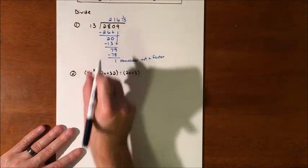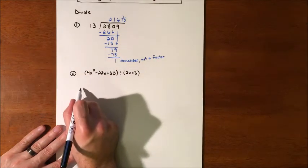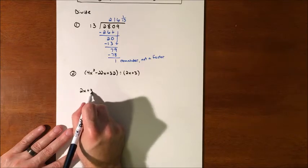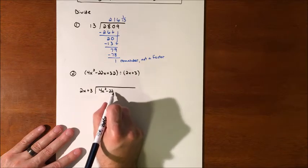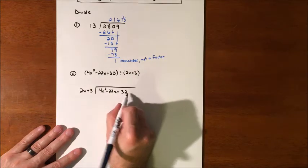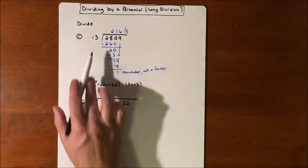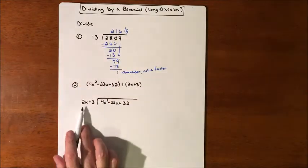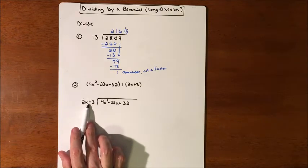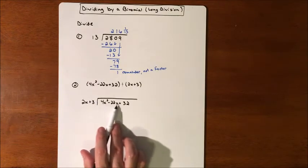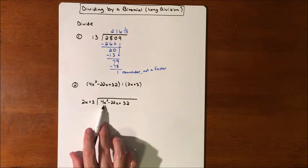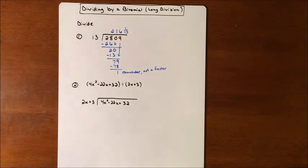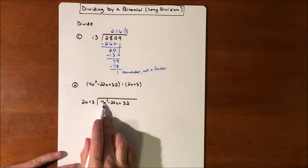So the setup is exactly the same as this one. We have 2x plus 3 dividing into 4x² minus 22x plus 32. We're going to try to make this multiply by something so it can cancel away as much as we can. In particular, we're going to try to make that 2x match the 4x² so we can cancel them away. What can we multiply 2x by to make it become 4x²? Well, that would be 2x.